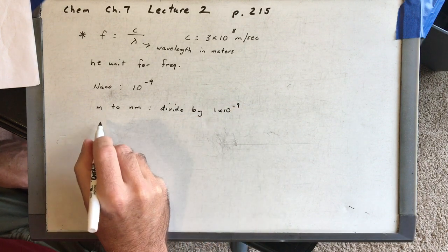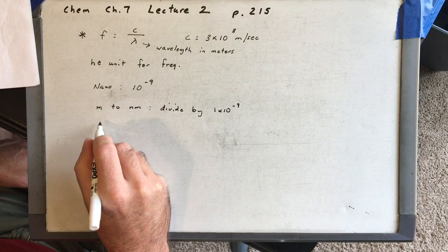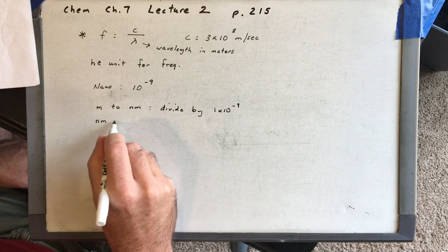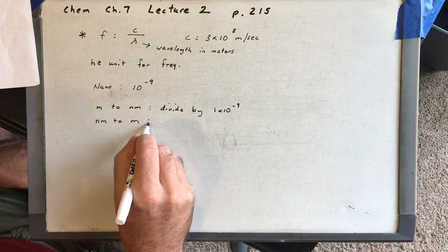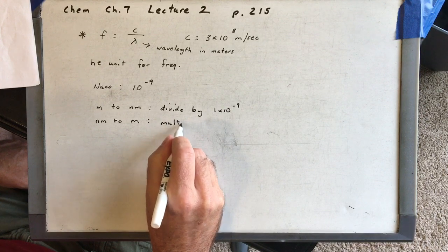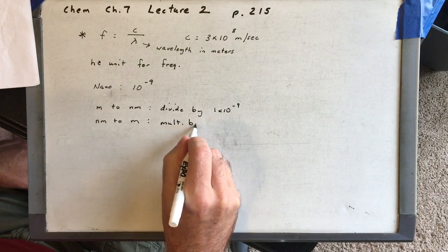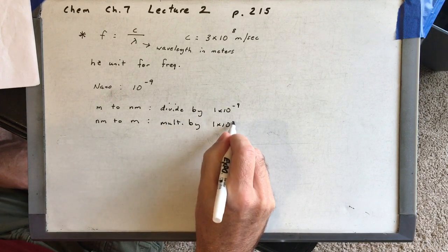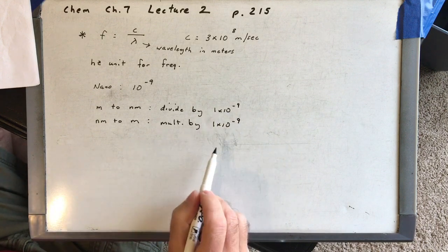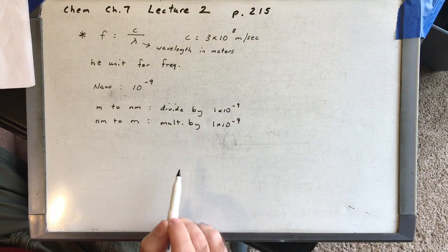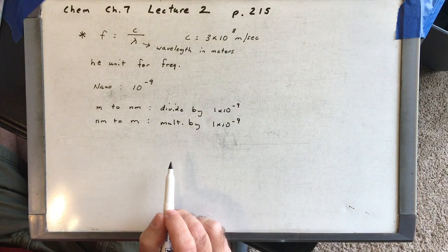And then to convert from nanometers to meters, we multiply by 1 times 10 to the minus 9. That might be confusing at first, but I think once we start working some problems you'll get used to it.